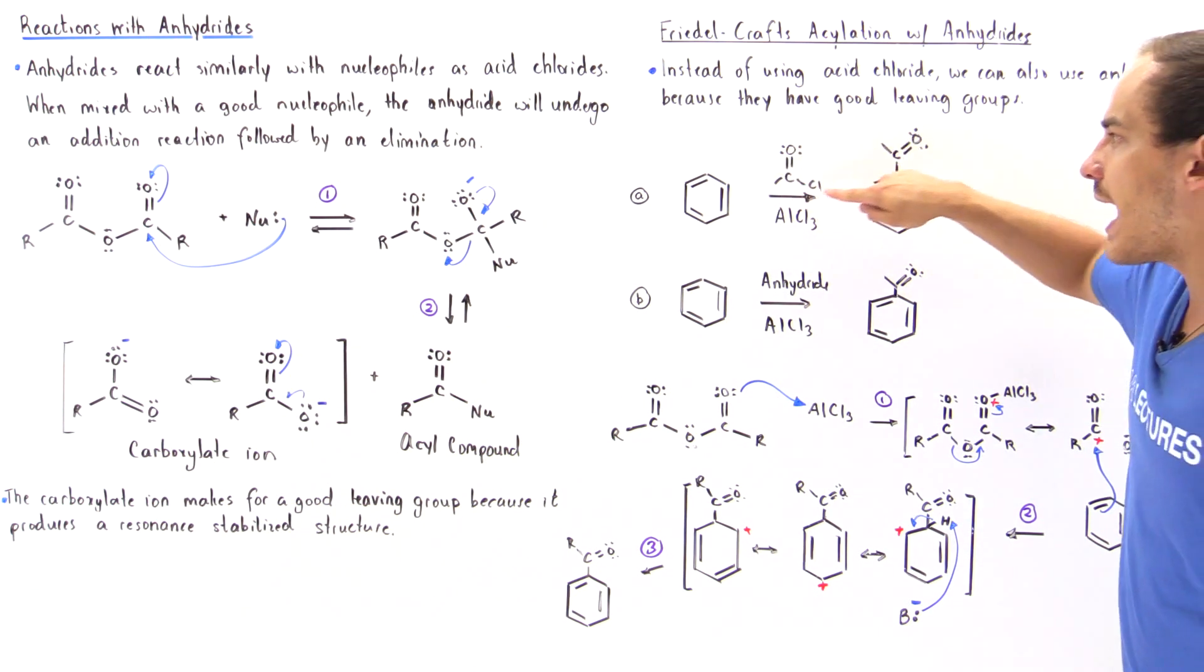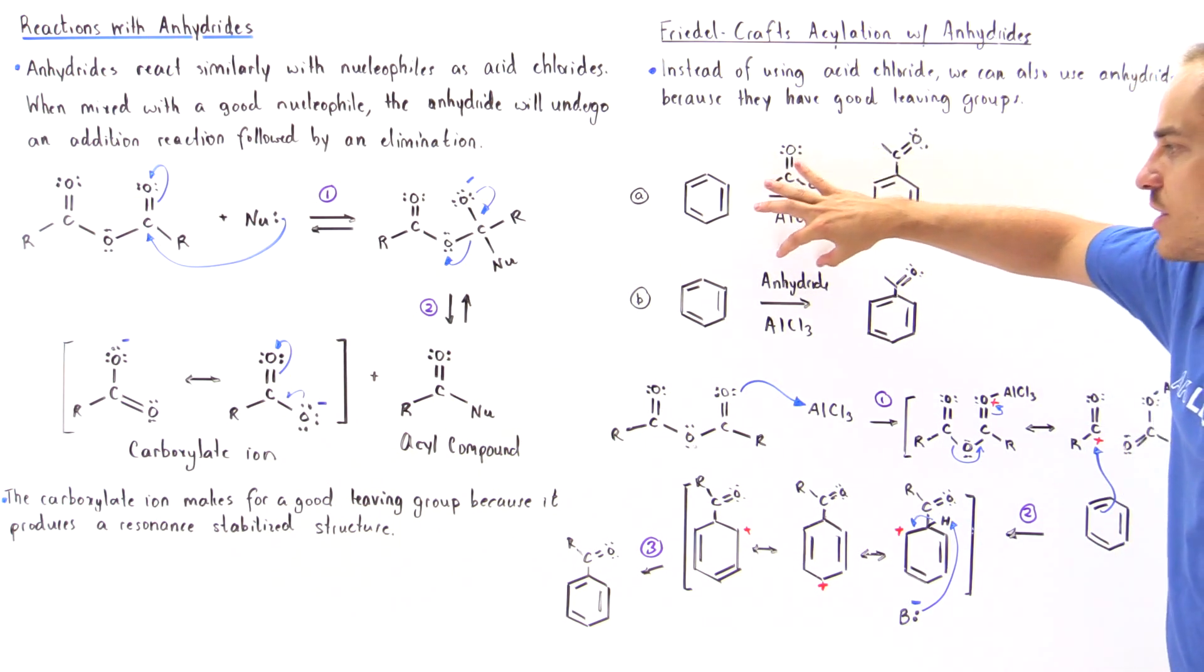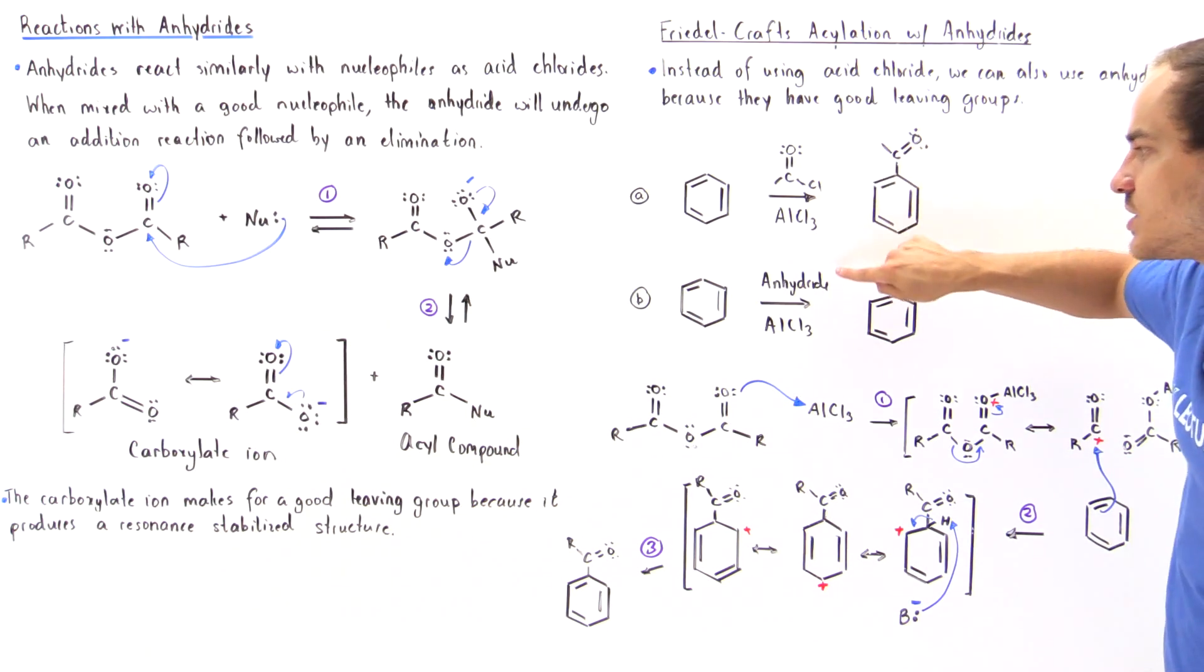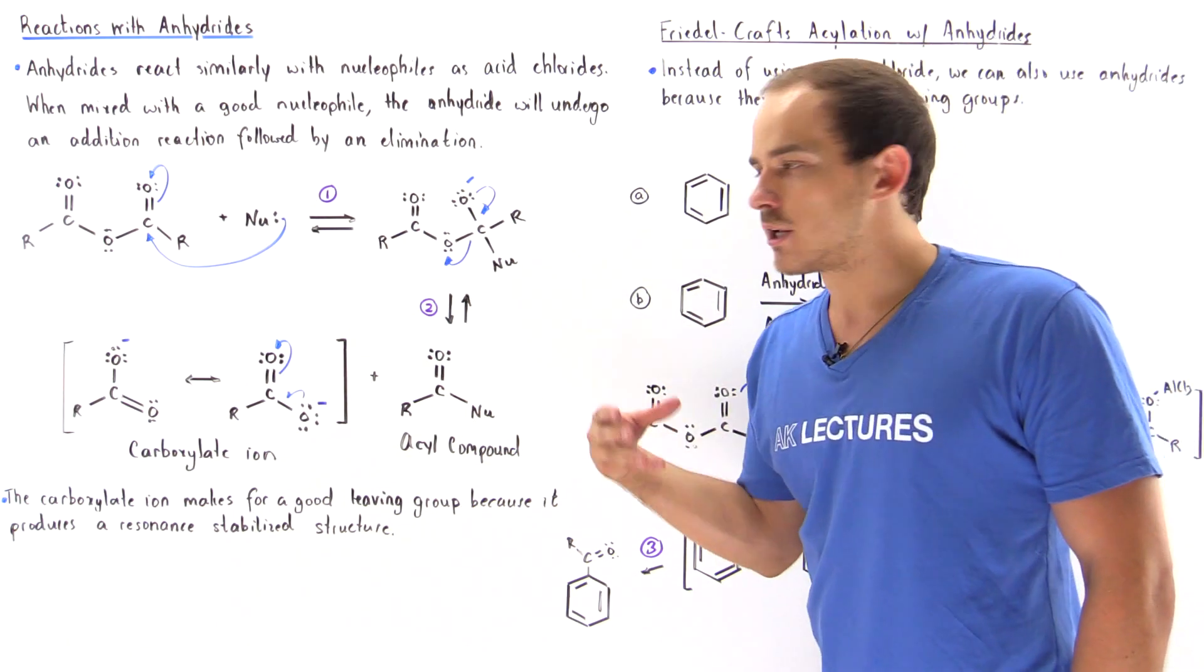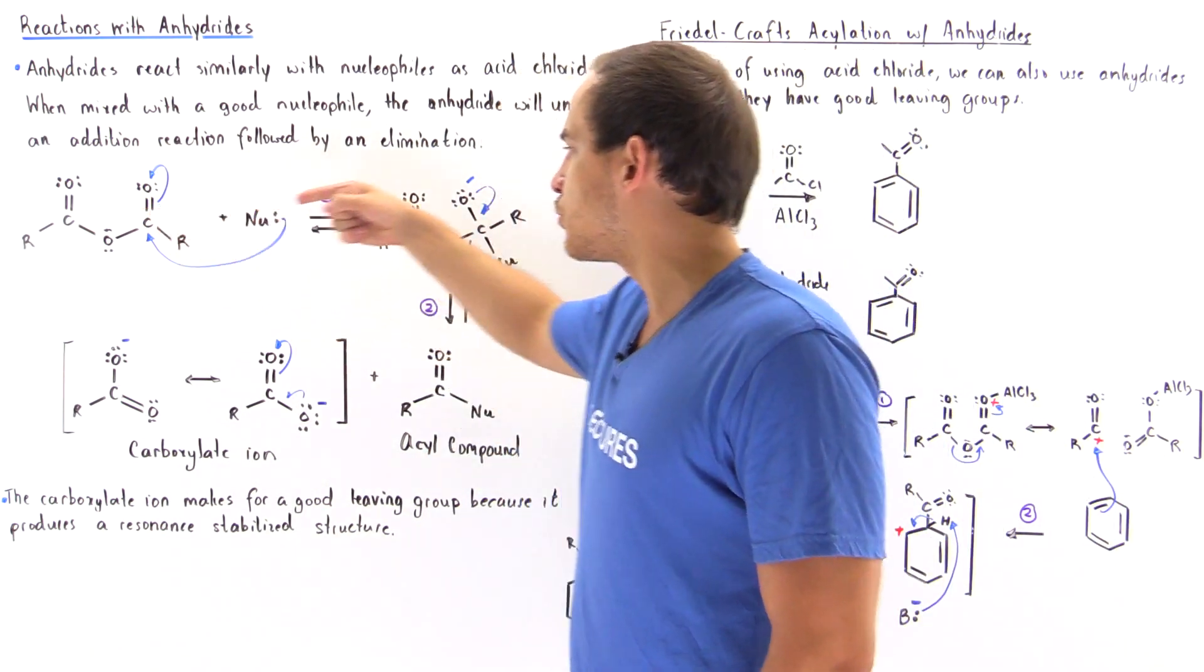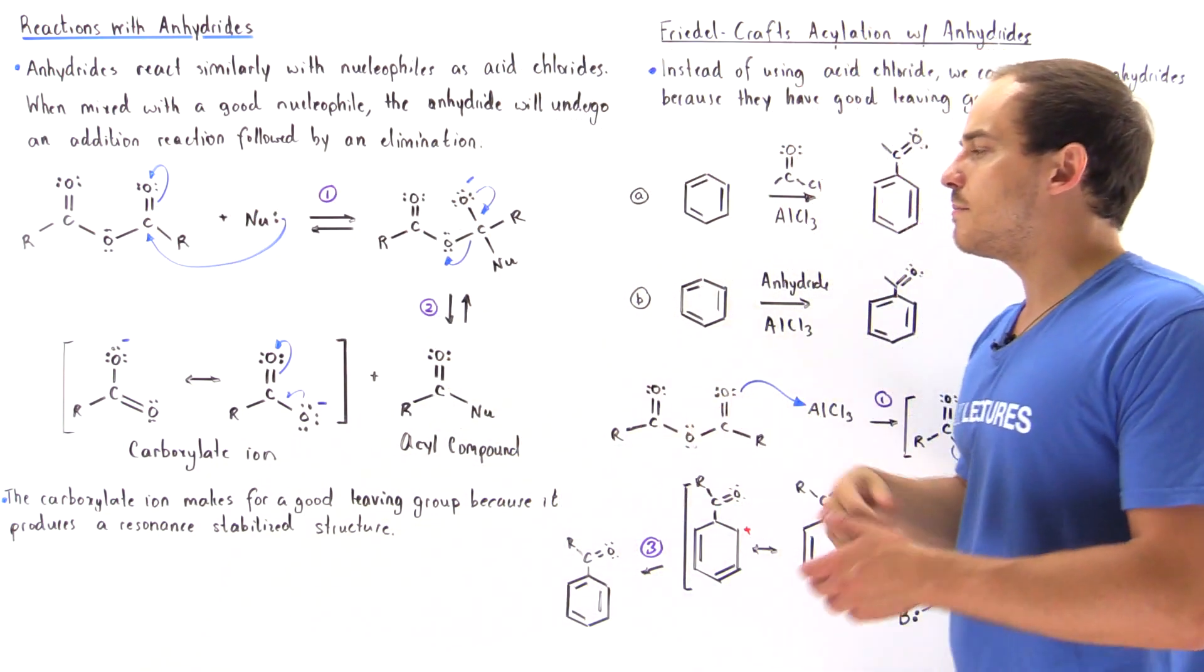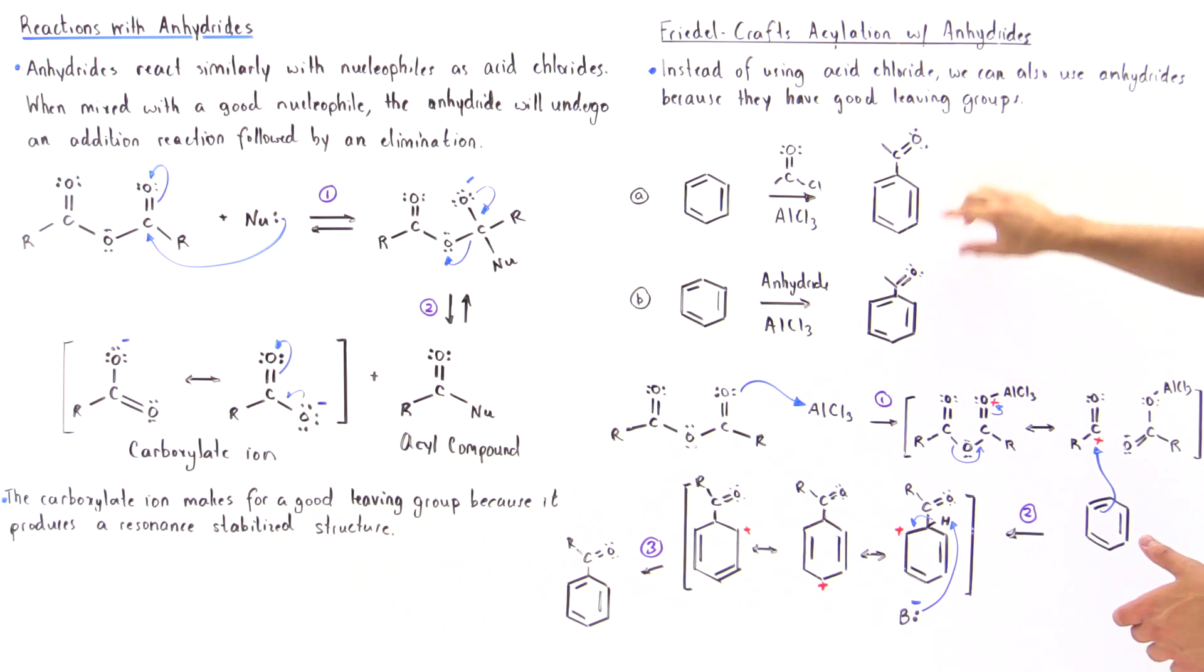Now if we replace our acid chloride with our anhydride, because these two molecules behave in such a similar fashion, they are able to undergo this addition elimination reaction. We produce the same exact type of product.